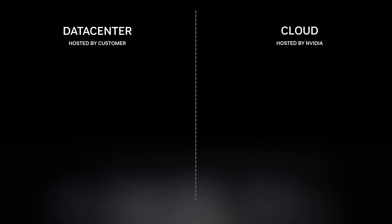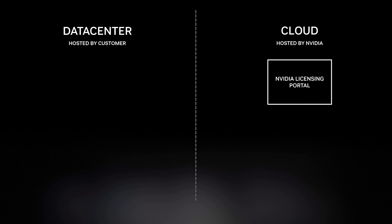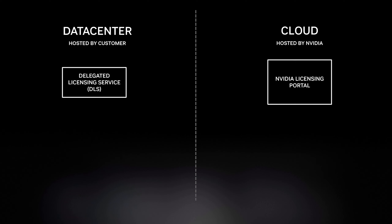Let's take a look at the architecture of both the CLS and DLS. Irrespective of whether you choose CLS or DLS, you'll be configuring your licensing services within the licensing portal online. The DLS, or delegated licensing service, is the nearest analogy to the previous licensing service — it's on-prem, managed by you the customer. It's virtual appliance-based, very simple to download and install, and supports VMware, Citrix, Hyper-V, KVM, and even Docker containers.